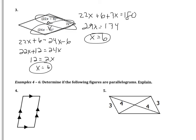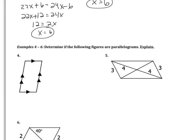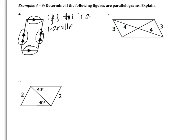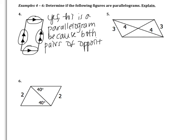The second type of problem, examples 4 through 6, asks you to determine if figures are parallelograms — yes or no. In example 4, we have one pair of sides that are parallel and another pair of sides that are parallel, which corresponds to property 1: both pairs of opposite sides are parallel. So yes, this is a parallelogram because both pairs of opposite sides are parallel.